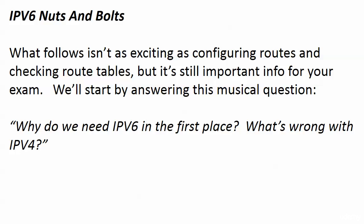Time for just a few IPv6 nuts and bolts. We're going to take a look at the version 4 and version 6 frame headers, note the differences, and answer the question: why do we need version 6 in the first place? What was wrong with IPv4? And by the way, did anyone know there's a number between 4 and 6? It's 5. IP version 5 does actually exist.